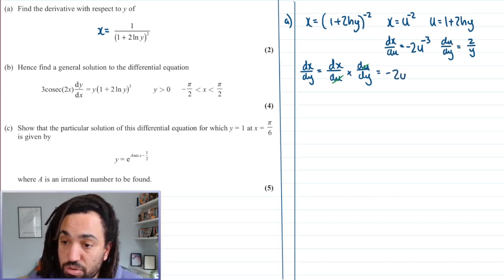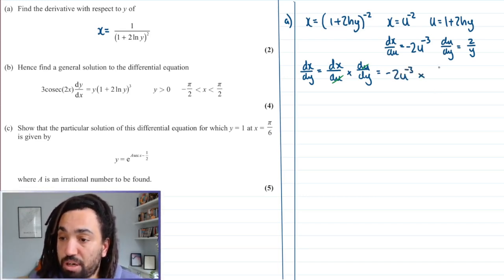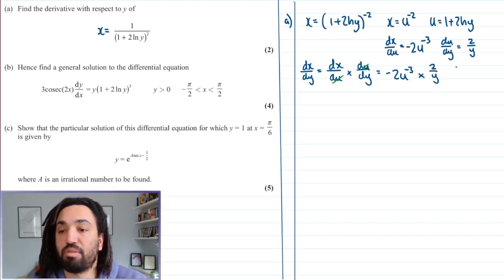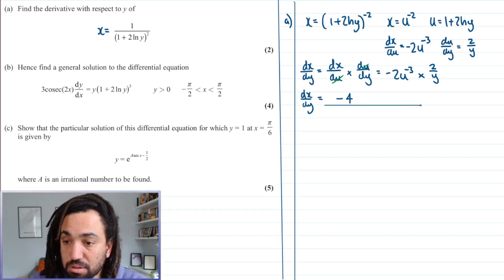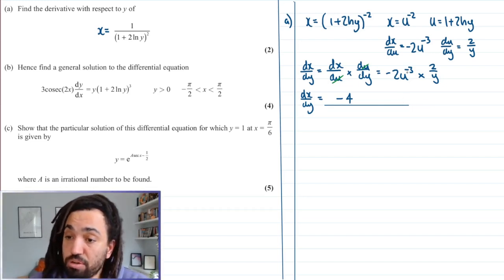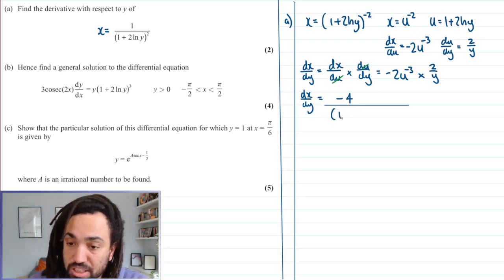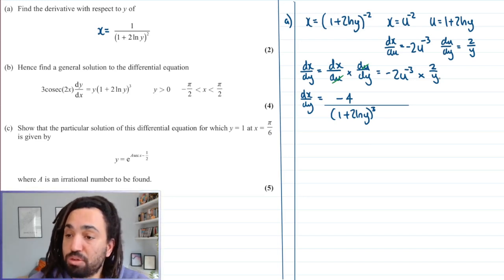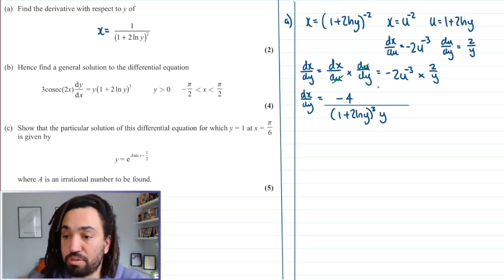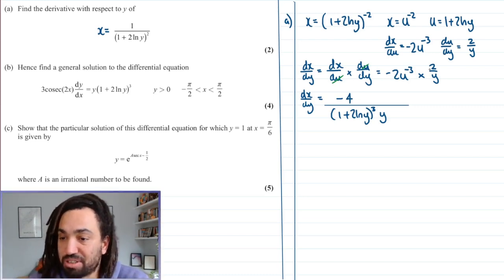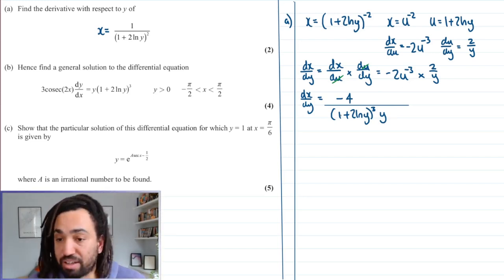So dx by du is minus 2u to the minus 3 multiplied by du by dy which is 2 over Y. Let's just tidy this up a bit. We could write this as minus 2 times 2 is minus 4. And then all the other things I could put on the denominator because the U is to the negative power, so that can go on the denominator. Remember U is 1 plus 2 ln Y, so I can say 1 plus 2 ln Y to the power of 3 if it's on the denominator. We've also got this over Y here, so that can go on the denominator as well. And there we have it. That is our derivative.